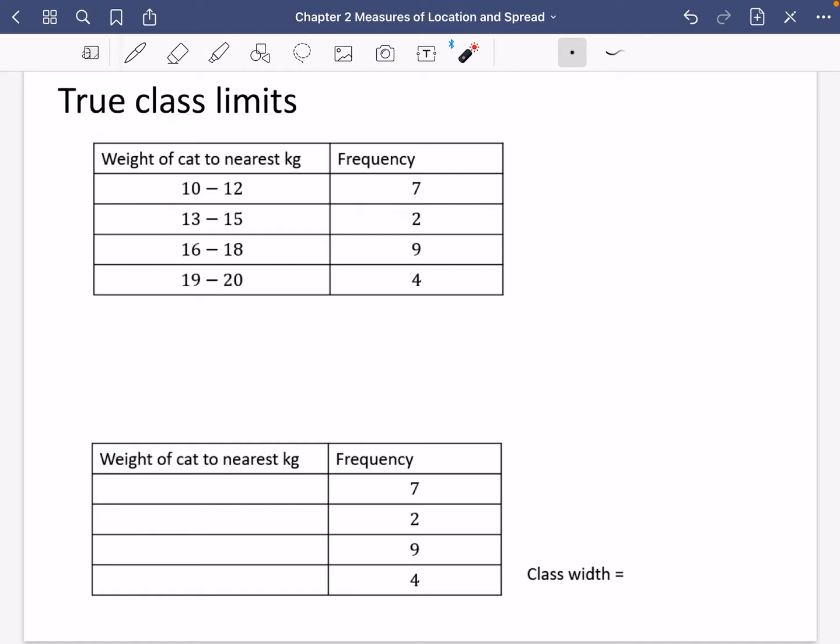Okay, I want to talk to you about how data is presented, and specifically with this idea of the true class limits. So I've got a table here with some class limits, but I want to turn them into their true class limits. What I mean by that is these look like they have been rounded to whole numbers here. So because these have been rounded, we've got some data that is missing. So there are gaps in the groups or the classes.